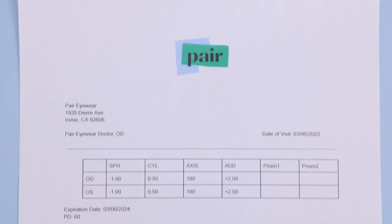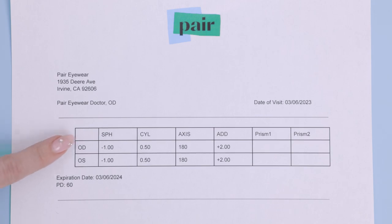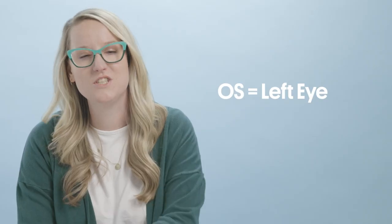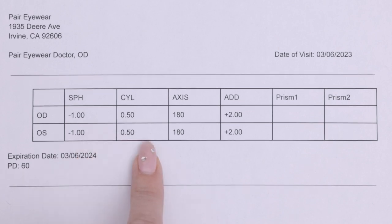When looking at your prescription, you'll typically see values for OD, or your right eye, or OS, which is your left eye. These are your prescription values, which ensures that we make the right pair for you.